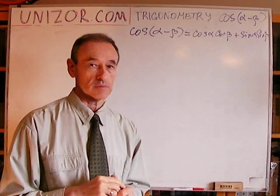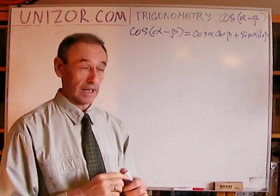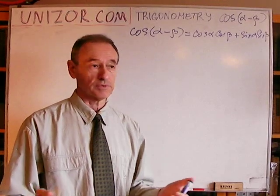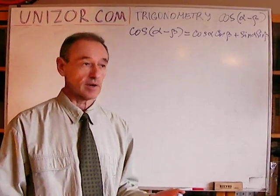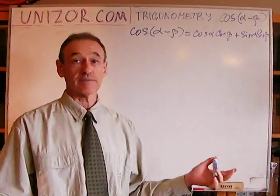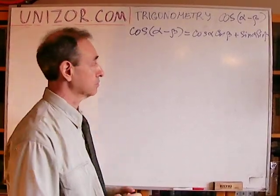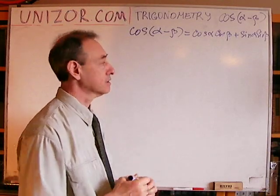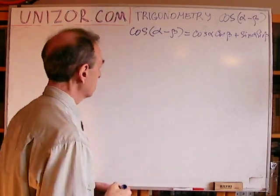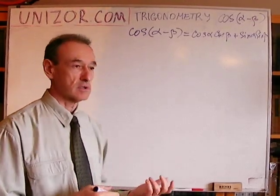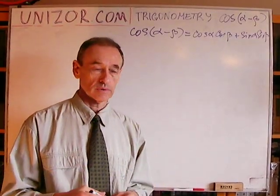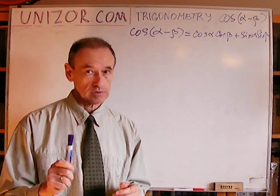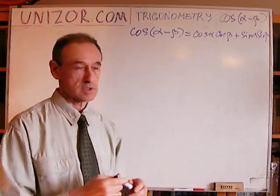Alpha and beta can be basically any angles — positive, negative, greater than pi, greater than 7 pi, or whatever you want. With this generality in mind, let's go back to the general definition of trigonometric functions using the unit circle.